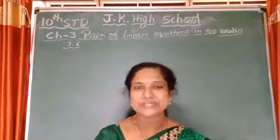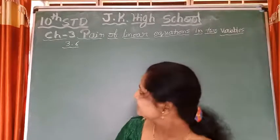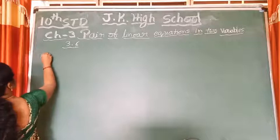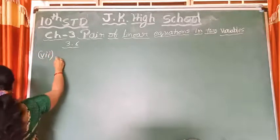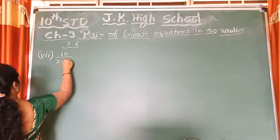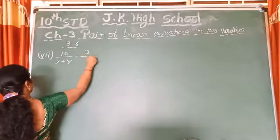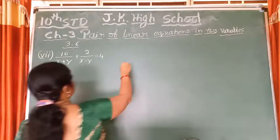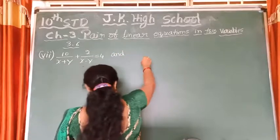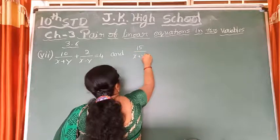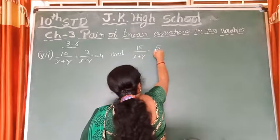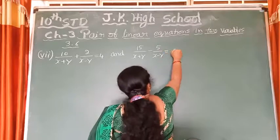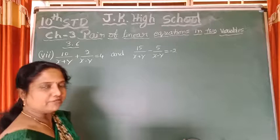Hello children, myself Shubhaya Patilkulkarani. I am going to continue 3.6 Chapter 3 Pair of Linear Equations in 2 Variables. The 7th question — up to the 6th one I have solved. The 7th question is: 10 divided by (x plus y) plus 2 divided by (x minus y) is equal to 4, and 15 divided by (x plus y) minus 5 divided by (x minus y) is equal to minus 2. We have to reduce this to standard form of linear equations in 2 variables.